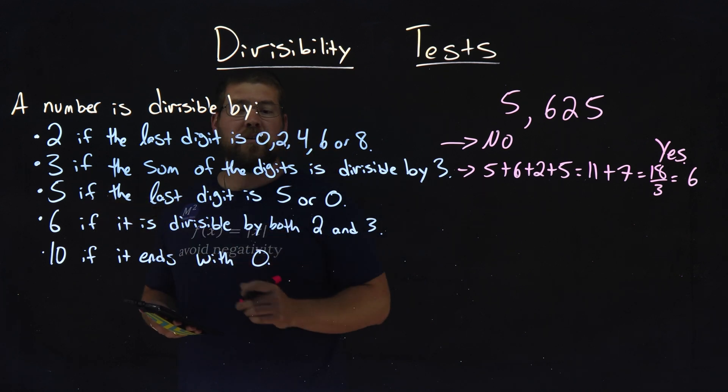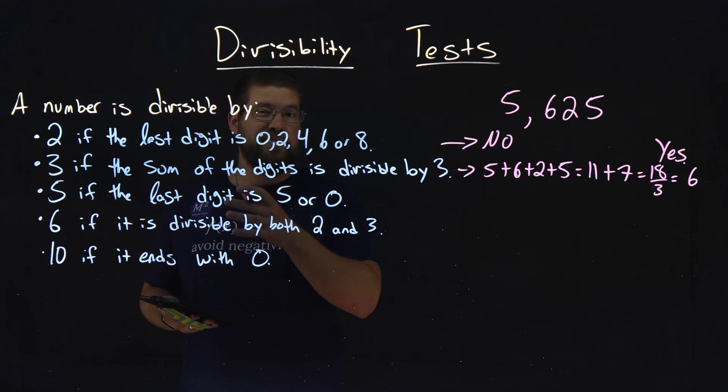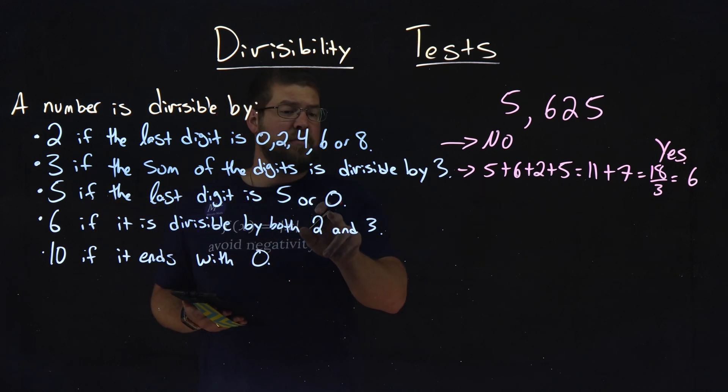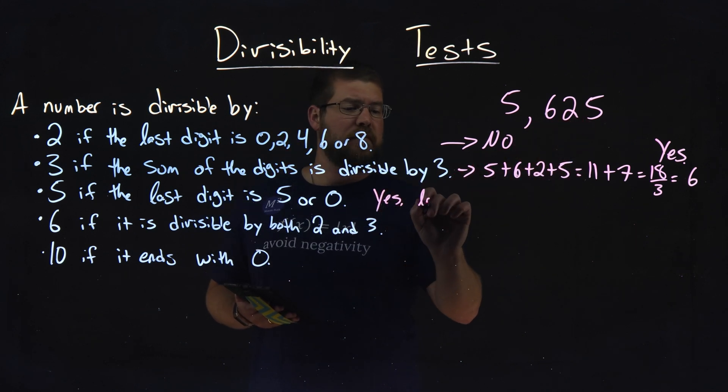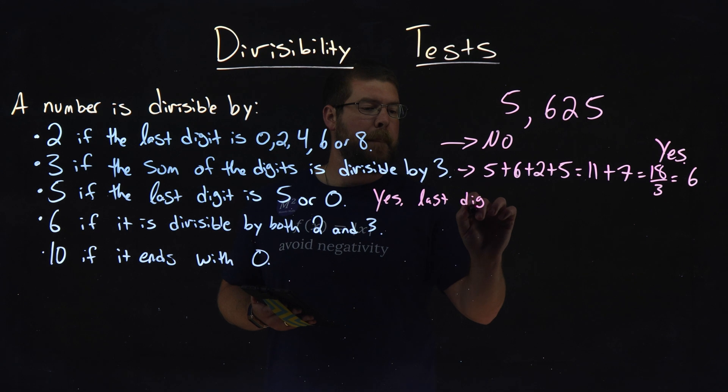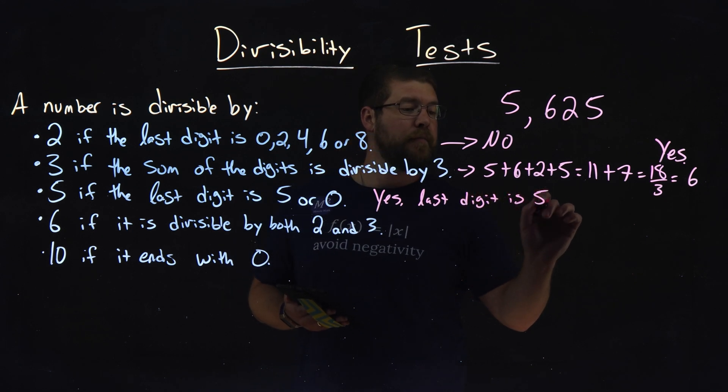What about 5? Is the number divisible by 5? Yes or no? Well, is the last digit 5 or 0? It's a 5. So yes. Last digit is 5.